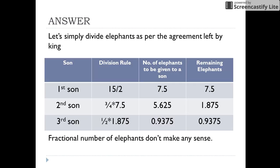Let us simply divide the elephants as per the agreement. According to the will, the first son was to be given half of the total elephants — that is, 15 by 2, which comes out to be 7.5. The remaining elephants are 7.5. The second son gets 3/4 of these remaining elephants, that is, 3/4 of 7.5, which comes out to be 5.625.